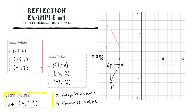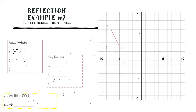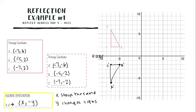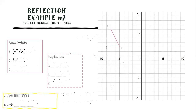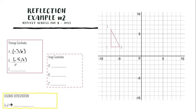This is the algebraic representation. It doesn't matter whether the points were originally negative or positive — x stays the same, y changes sign, giving us (x, -y). Now let's look at example number two. These are the same points: A at (-7, 6), B at (-5, 2), and C at (-7, 2).